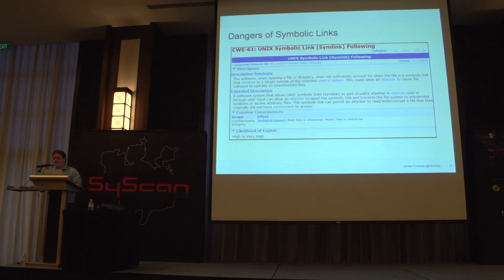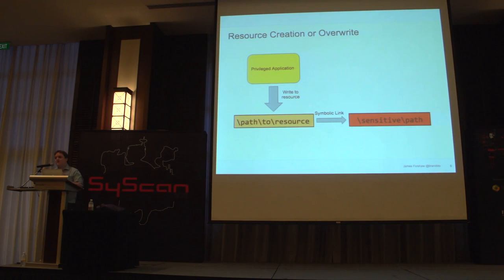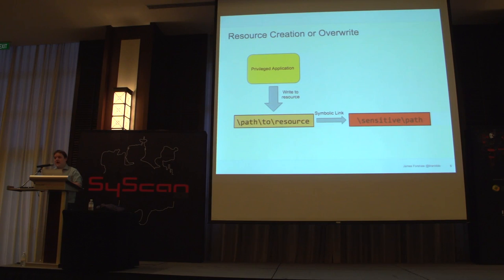There are three main vulnerabilities you'll find which you can exploit using symbolic links. The first is privileged resource creation — where you have a privileged service or application running and it creates a file, say a temporary file. As an attacker, even if you can't control that file path, you can still drop a symbolic link in that target directory and cause the privileged application to write somewhere that you, as a normal user, would not be allowed to access.